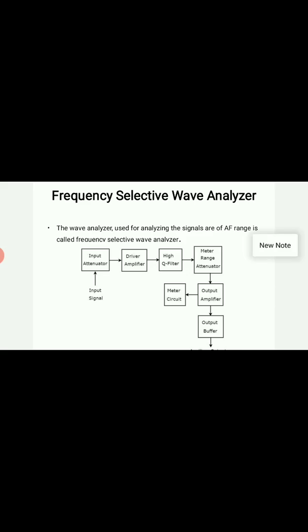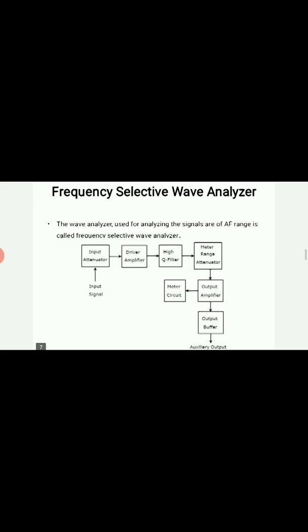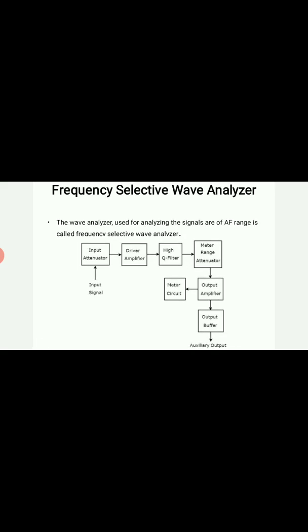The general block diagram of a frequency selective wave analyzer is given below. You can see there is an input attenuator to which the input signal is applied, then a driver amplifier stage. The input signal, after passing through the input attenuator which attenuates the signal if required, passes through the driver amplifier which amplifies the signal if required. It then passes to the high Q filter, or high quality factor filter, which selects a signal using an RC filter stage into a very narrow bandpass signal.